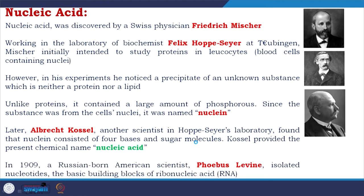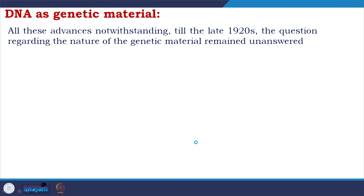In 1909, Russian-born American scientist Phoebus Levine isolated nucleotides — the basic building blocks of ribonucleic acid. However, these advances were actually not making a major impact until the late 1920s, and the question regarding the nature of genetic material remained unanswered.